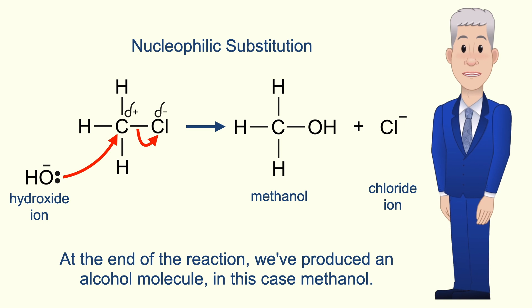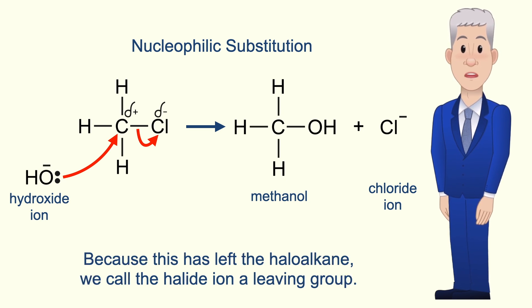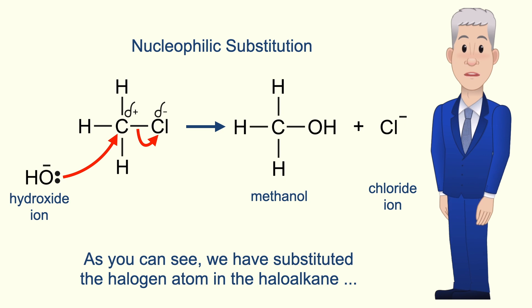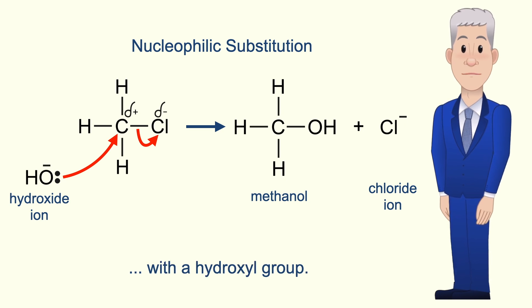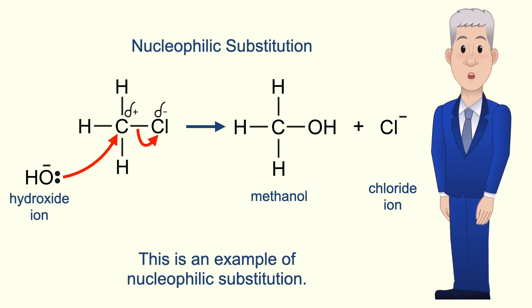At the end of the reaction we've produced an alcohol molecule — in this case methanol. We've also released a halide ion — in this case the chloride ion. Because this has left the haloalkane we call the halide ion a leaving group. As you can see, we've substituted the halogen atom in the haloalkane with a hydroxyl group. Scientists call this a hydrolysis reaction, and this is an example of nucleophilic substitution.